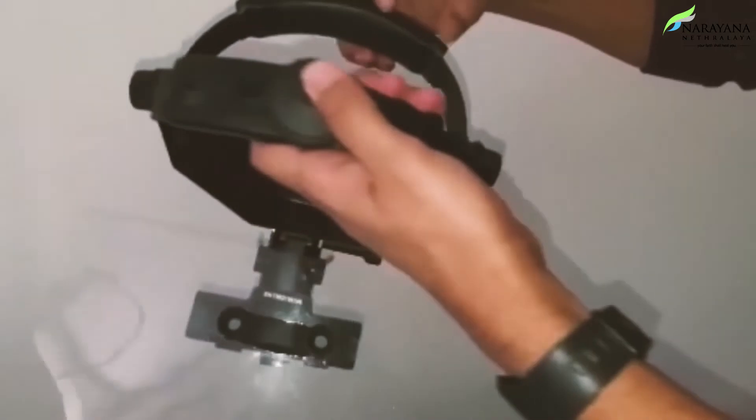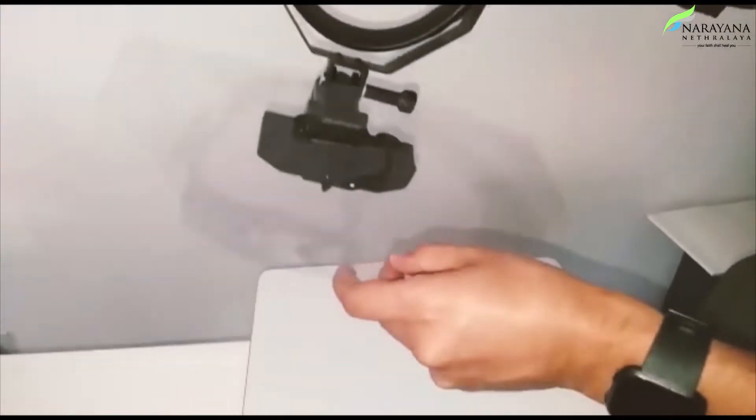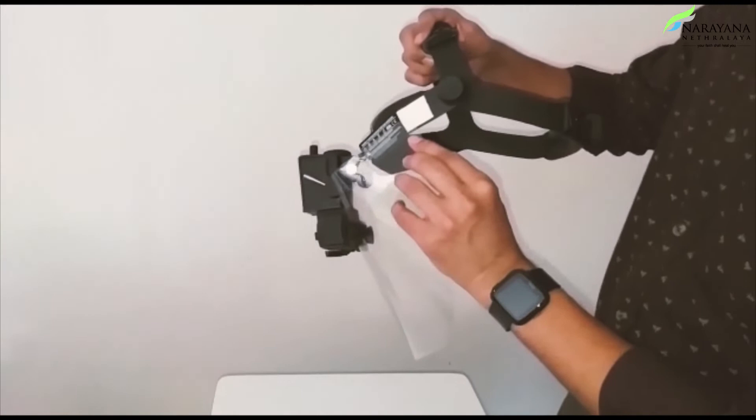Fix two pieces of adhesive foam on either side of the IDO headband. Place the sheet on the eyepiece and stick it on either side.